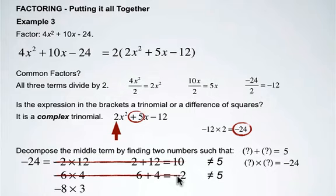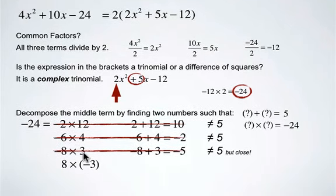Another set of factors, negative 8 and 3, will give us negative 5. We're close. We'll try switching around these signs: 8 times negative 3, which are two factors of negative 24. They will give us a sum of 5.